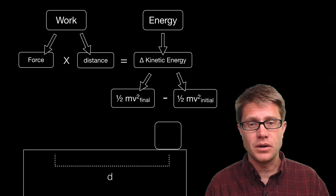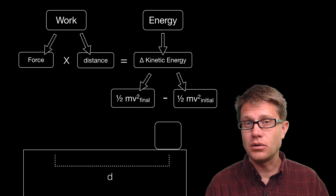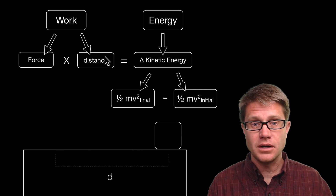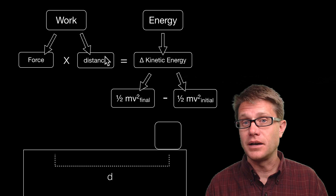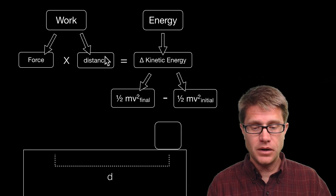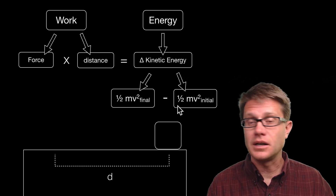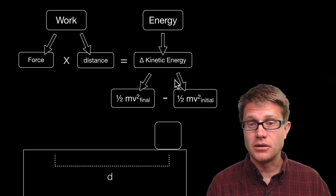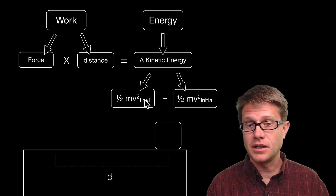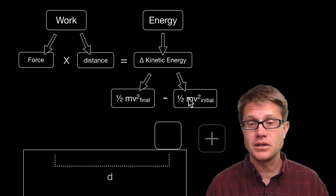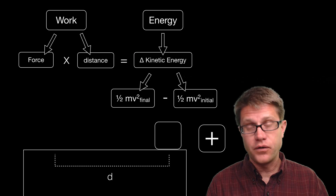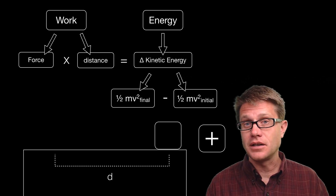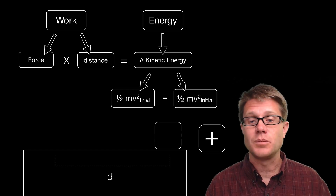Now let's work qualitatively for a second. Have we added energy to that object or have we taken it away? Since we applied a force to the right over a given distance, we know that the work is going to be a positive value. If we look at its initial kinetic energy, since it had a velocity of zero, that is a zero value. Taking a final velocity minus a zero value gives us a positive value. So you can look at either the force direction or the change in velocity to tell you whether energy is being added or taken away.